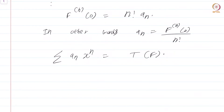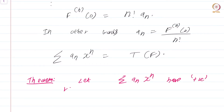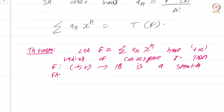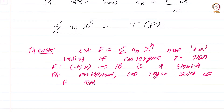So the net upshot is summarized in the following theorem. Let summation aₙxⁿ have positive radius of convergence r, and let f be the limit function. Then f from (-r, r) to the real numbers is a smooth function. Furthermore, the Taylor series of f centered at 0 coincides with summation aₙxⁿ.